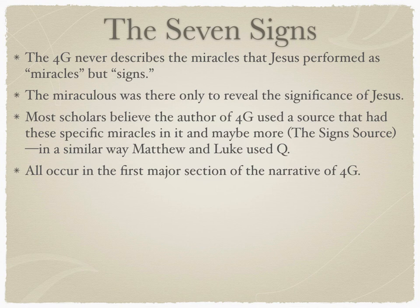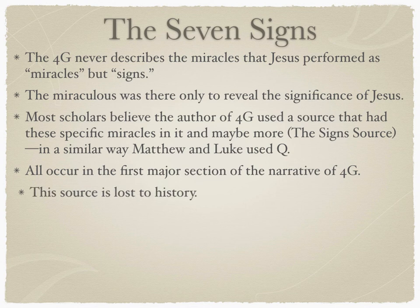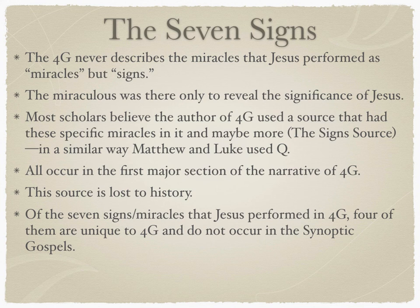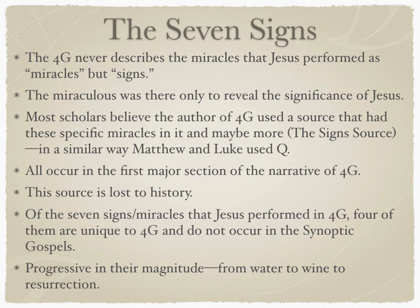All of the miracles in the Gospel of John occur in the first major section of the narrative — the Book of Signs — and we'll get into that outline in the next lecture. This signs source is lost to history. Of the seven signs that Jesus performed in the Fourth Gospel, four of them are unique to it and do not occur in the Synoptic Gospels.